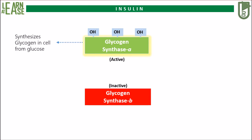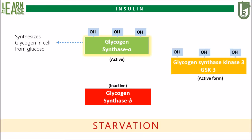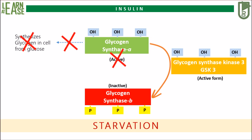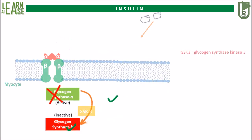But during starvation, another enzyme, glycogen synthase kinase 3 (GSK3), exists in its active form. This enzyme also possesses several serine and threonine residues which are non-phosphorylated when it is working actively. GSK3 phosphorylates the serine and threonine residues of glycogen synthase and inactivates it. Thus, during starvation, glycogen synthase is inactive and there is no glycogen synthesis in the muscle cell.